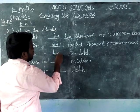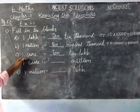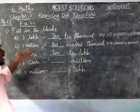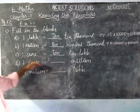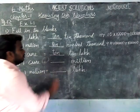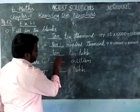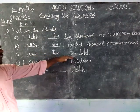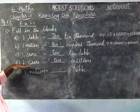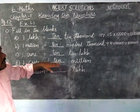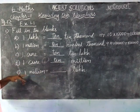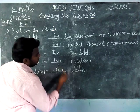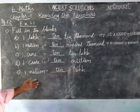Then 1 crore is equal to 10 lakhs in the Indian number system. In the international number system, 1 crore is equal to 10 million. Also, 1 million is equal to 10 lakhs.